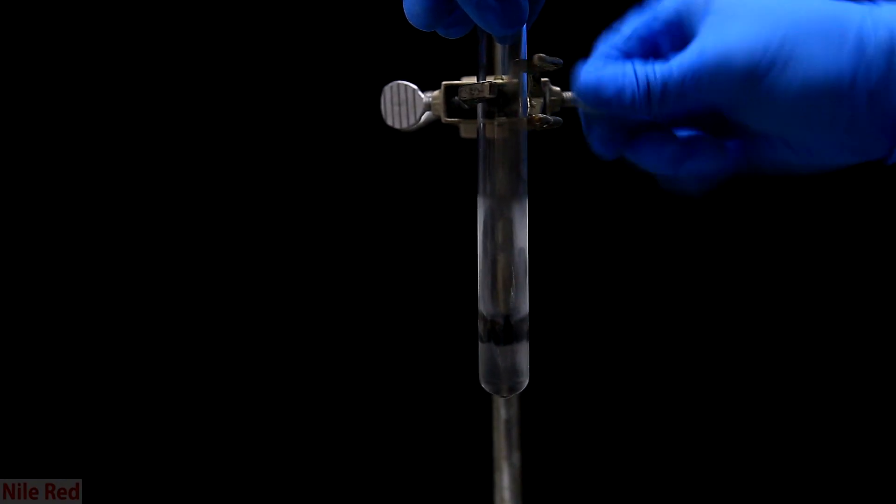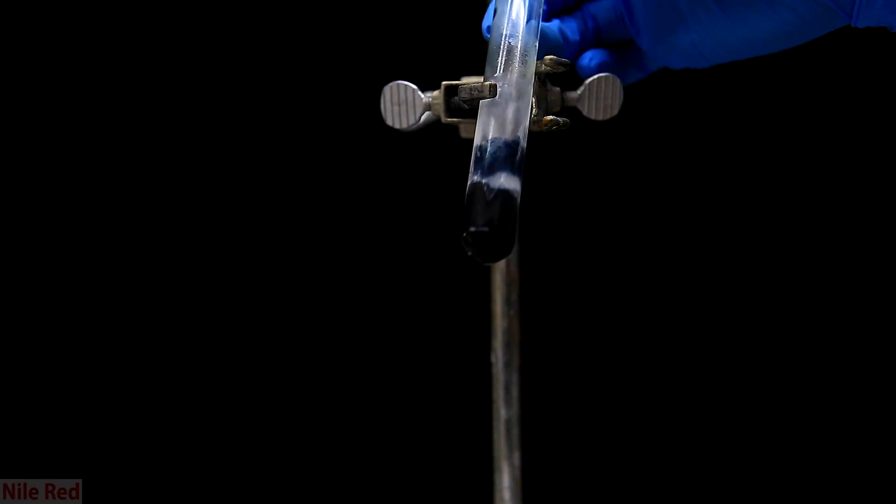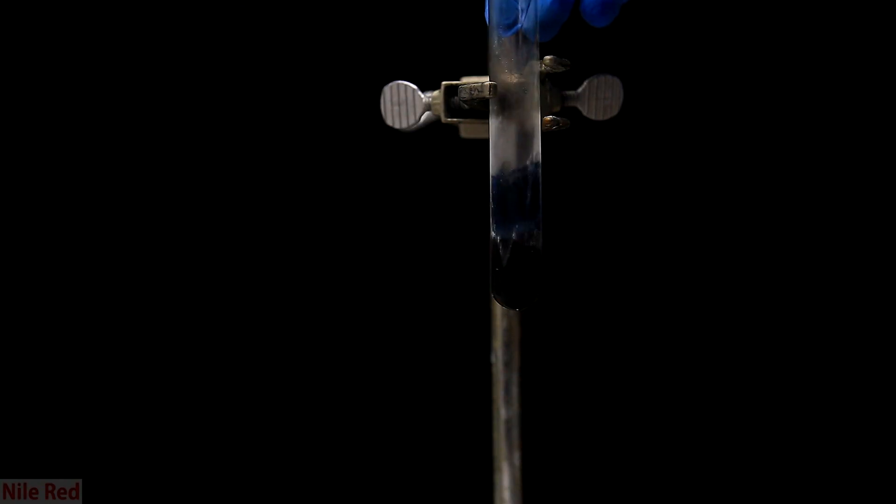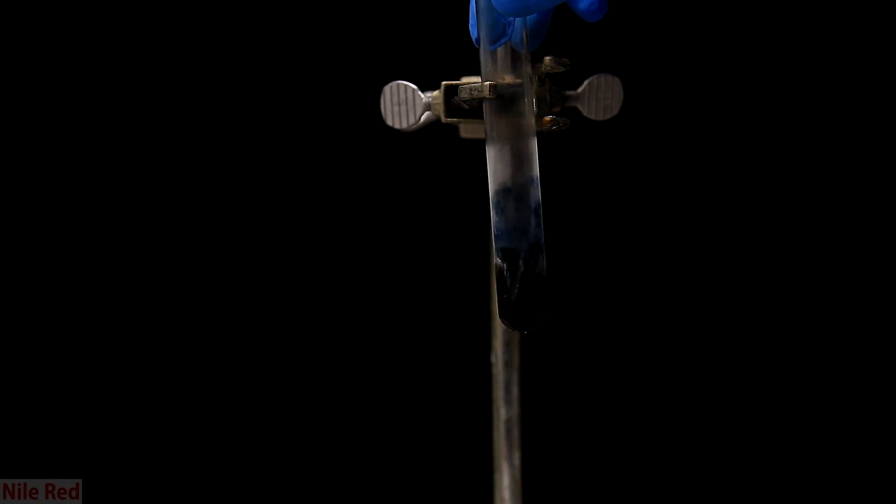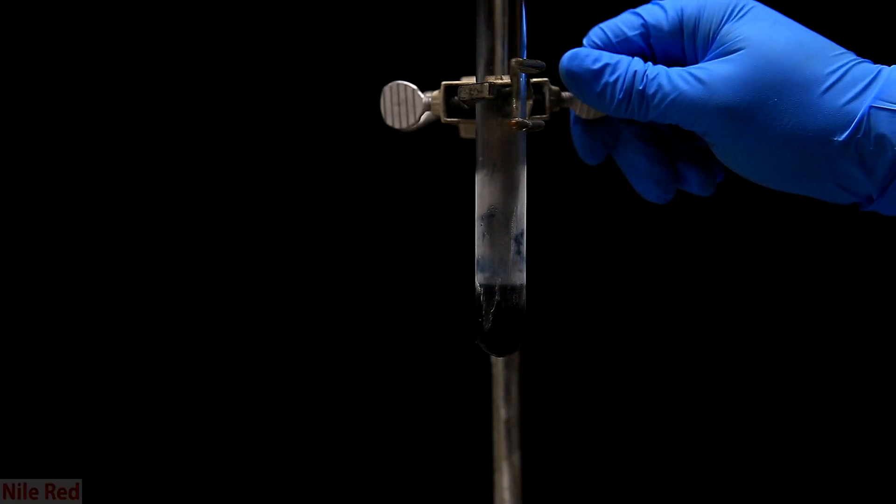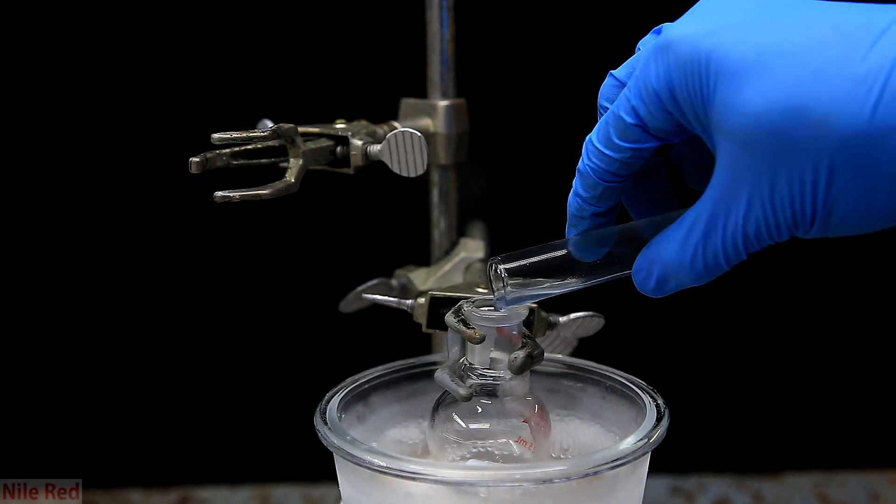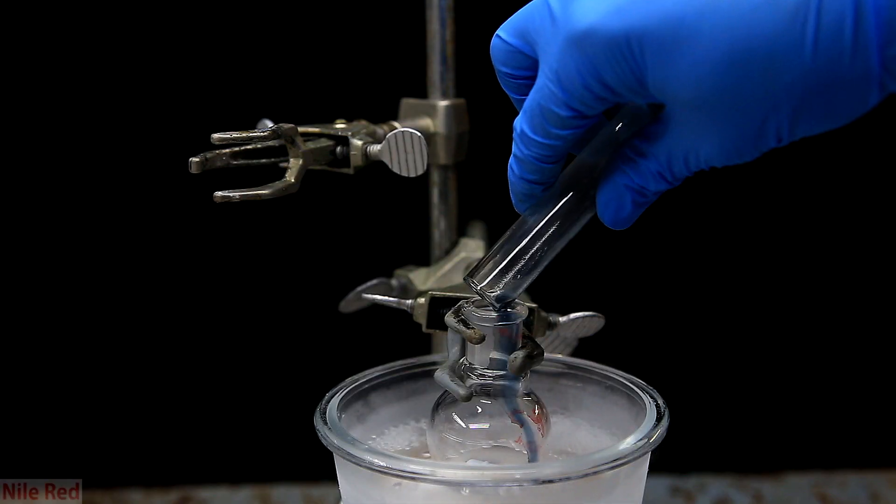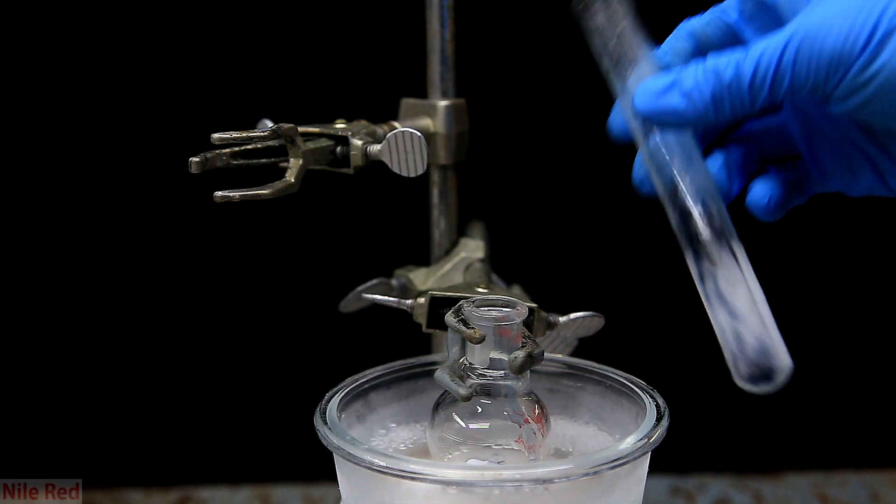Unfortunately, I didn't plan super well, and I used the black background instead of a white one. You can still see the blue color, but it's not as evident as it could have been. We can pour out the contents of the test tube, and we can see a nice blue liquid comes out. In the same flask, I added more liquid ammonia and more lithium, but unfortunately, I lost the footage somehow.